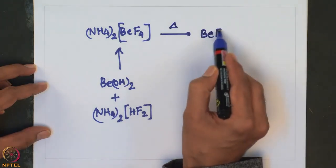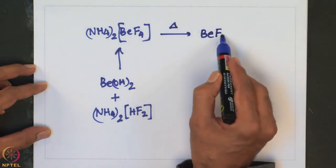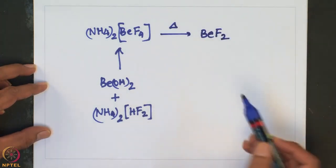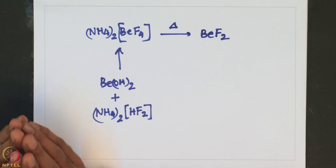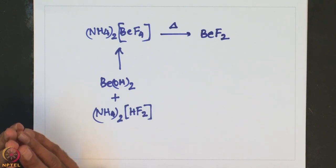The thermal decomposition of ammonium tetrafluoroberyllate gives BeF2. Beryllium difluoride is a glassy solid that exists in several temperature-dependent phases similar to SiO2, and it is soluble in water forming the hydrate.